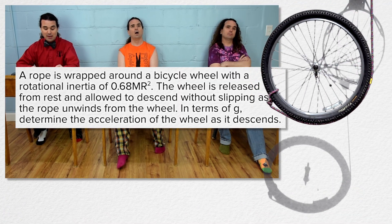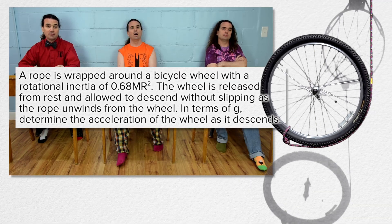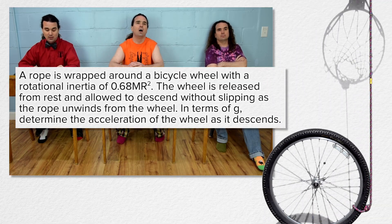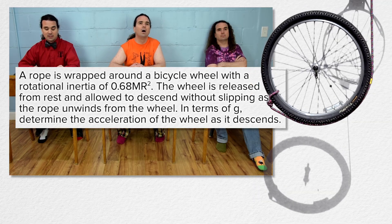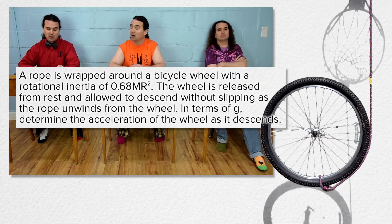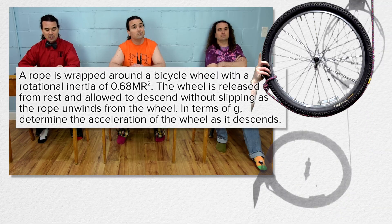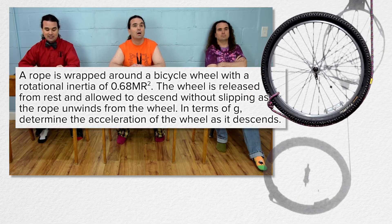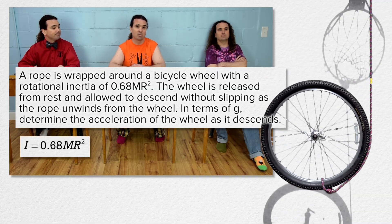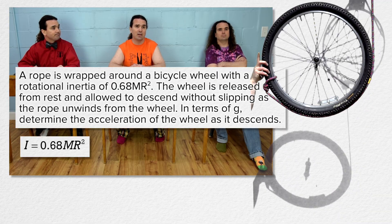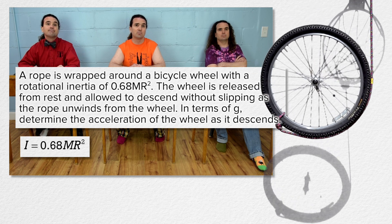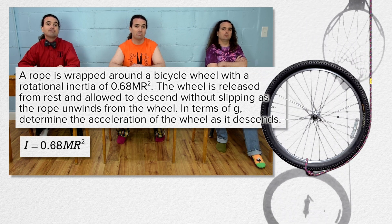A rope is wrapped around a bicycle wheel with a rotational inertia of 0.68 times the mass of the wheel times the radius of the wheel squared. The wheel is released from rest and allowed to descend without slipping as the rope unwinds from the wheel.